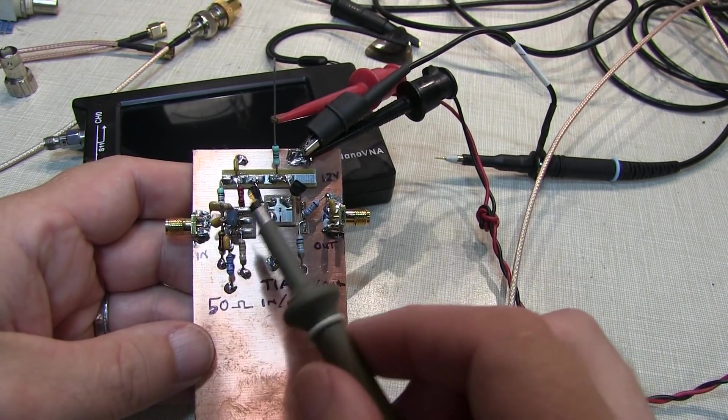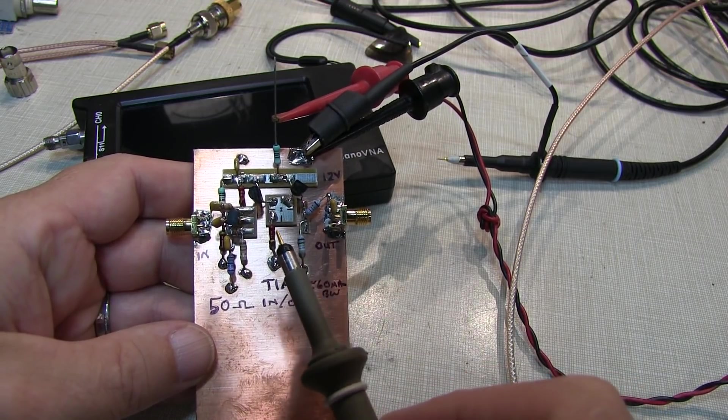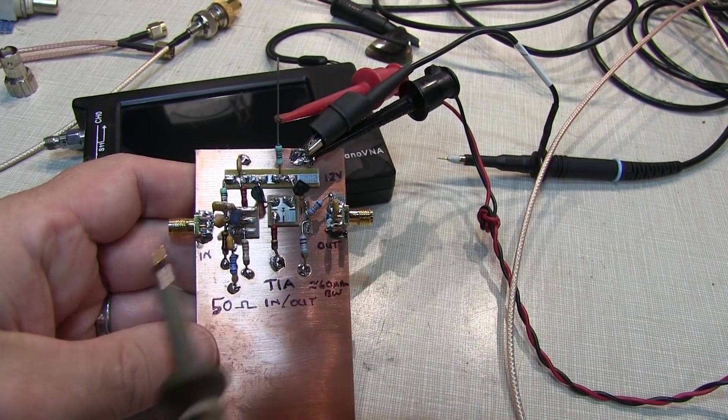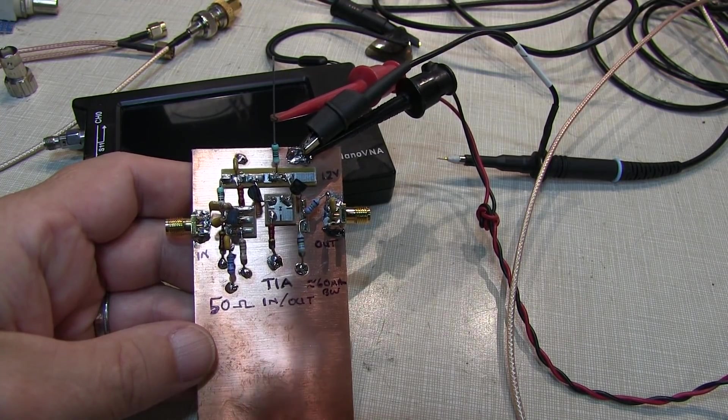He was using an amplifier such as this in the IF stage of a rig and wanted to use the NanoVNA to validate the input impedance of this amplifier, but was getting some confusing results.